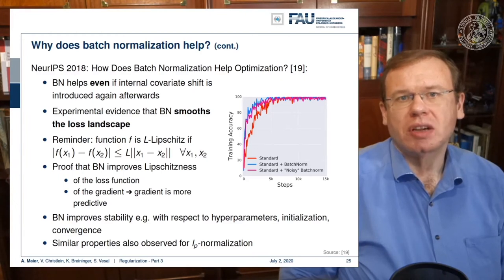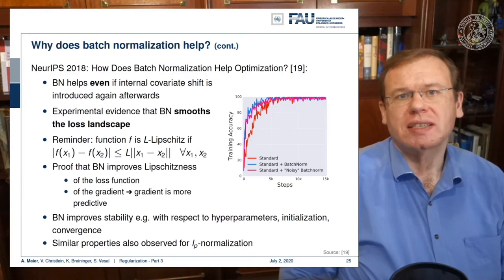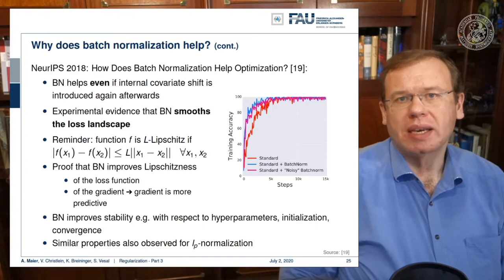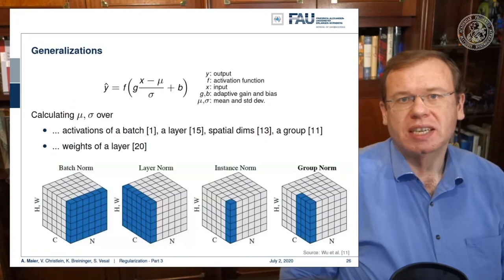So batch normalization improves stability with respect to hyperparameters, initialization, convergence, and similar properties. By the way, this can also be observed for LP normalization. So batch normalization is the way to go.